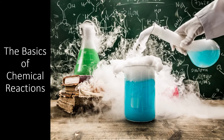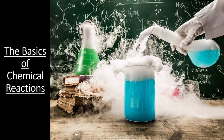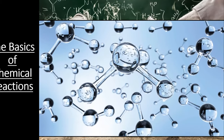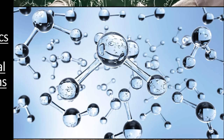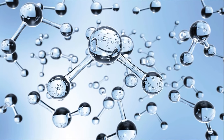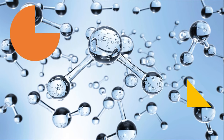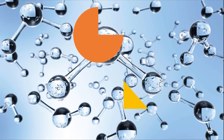Before we can understand how an enzyme works or why they are a necessary part of cells, we have to understand how a typical chemical reaction takes place. Since nearly every reaction in biology takes place in an aqueous environment, let's consider what is happening at the molecular level in a solution. In an aqueous solution, there are trillions and trillions of water molecules all moving and pulling each other around. If we add two reactants to this solution, they will not immediately react with one another. First, the two molecules have to find each other — given that water molecules are dragging them around, this is no easy task.